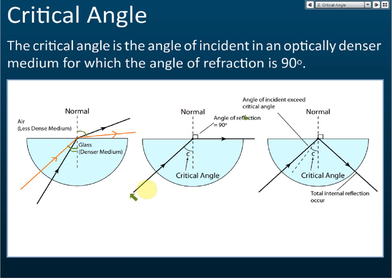This is the angle of incidence, and this is the refracted ray — this is the angle of refraction. The critical angle is the angle of incidence in an optically denser medium. It must be inside the optically denser medium — it cannot be in a less dense medium. If the light ray goes from less dense to denser, there is no critical angle. It must go from denser to less dense for a critical angle to exist.